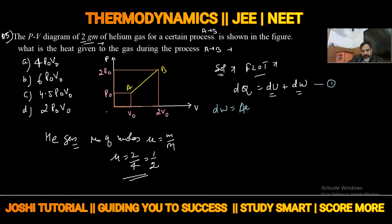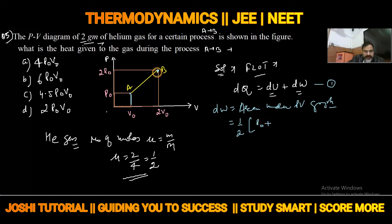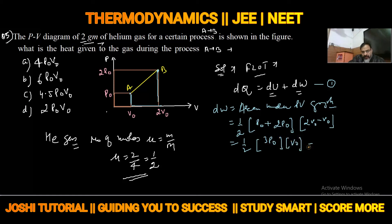Work done = area under P-V graph. The P-V graph forms a trapezium. Area of trapezium = half × sum of parallel sides × separation between them. The parallel sides are P₀ and 2P₀, and separation = 2V₀ − V₀ = V₀. So work done = half × 3P₀ × V₀ = 3P₀V₀/2.